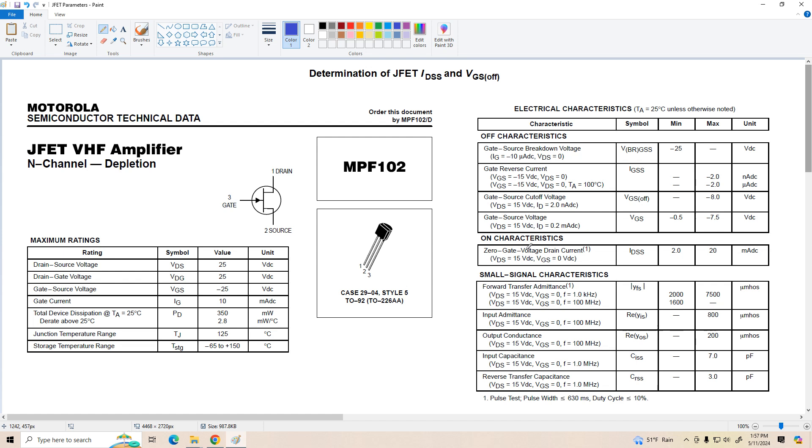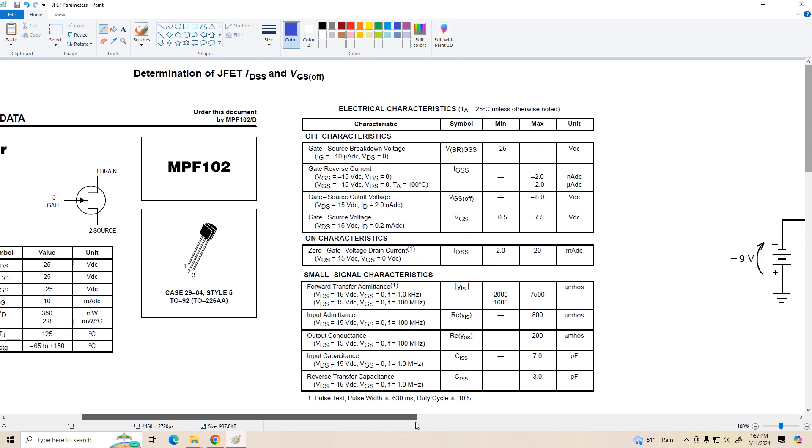And finally, the IDSS value for the MPF-102 can range from two milliamps to as high as 20 milliamps. I've never seen one as high as 20. I've seen a few down at the two milliamp range though. So most of the MPF-102s are going to be more down towards the lower end of the IDSS range. All right, the rest of these parameters we'll be talking about in the next video. So for right now, let's just go on over and take a look at the experimental setup I'm going to use.